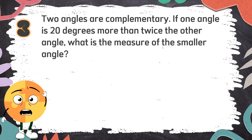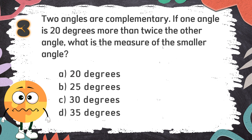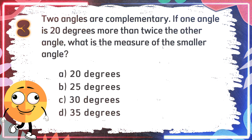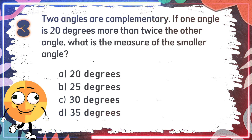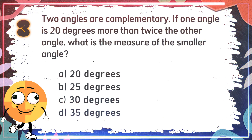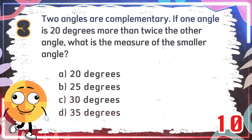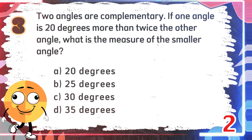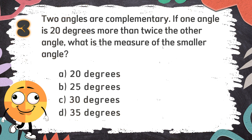Number 3: Two angles are complementary. If one angle is 20 degrees more than twice the other angle, what is the measure of the smaller angle? The choices are: A. 20 degrees, B. 25 degrees, C. 30 degrees, D. 35 degrees. The correct answer is A, 20 degrees.